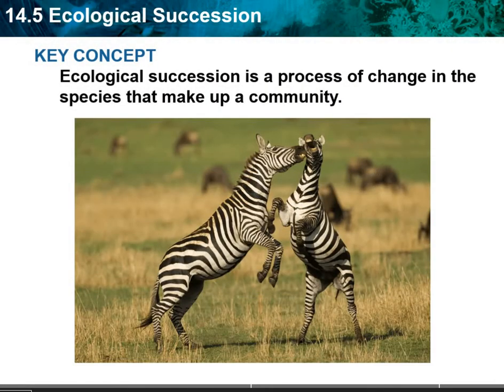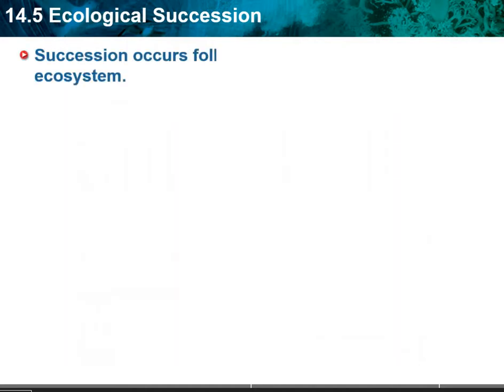In section five, we're going to be looking at what is known as ecological succession. Ecological succession is a process of change in the species that make up a community. Most of the time when we look at ecological succession, it's going to be referring to the plants in the area.